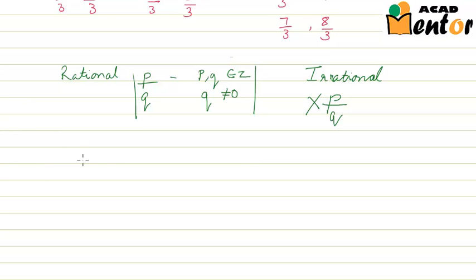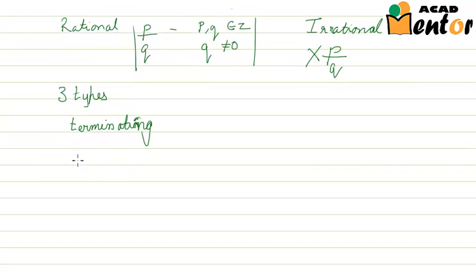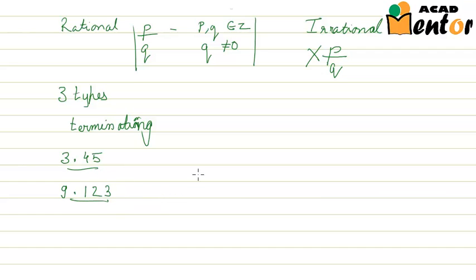If you consider decimal numbers, there are three types. The first one is terminating decimals. As the name suggests, these numbers end after the decimal point. For example, 3.45 ends after two digits, and 9.123 ends after three digits. So these are all terminating numbers.